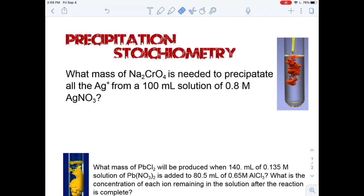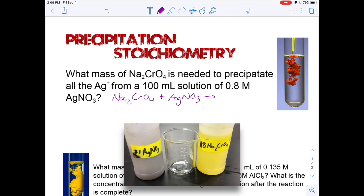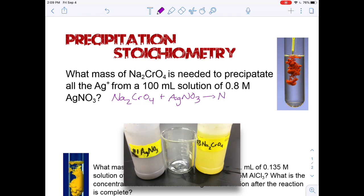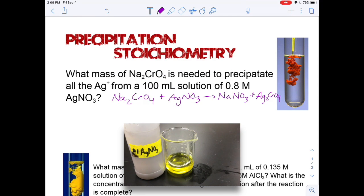Let's talk about what the equation is. So what I'm basically doing is taking the sodium chromate and reacting it with the silver nitrate. Because of that, it looks like a double replacement reaction, so I'm going to have my sodium with my nitrate and I'm going to have my silver with my chromate.